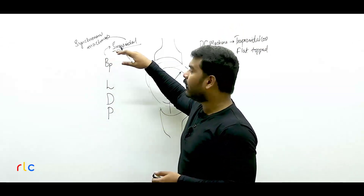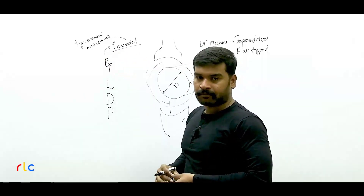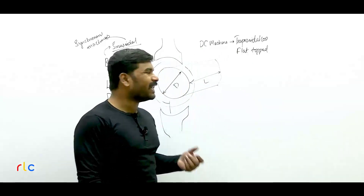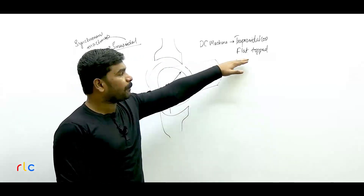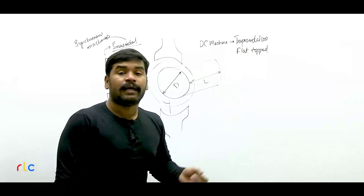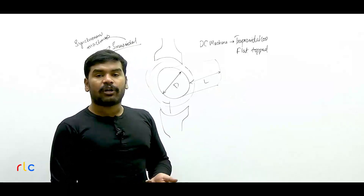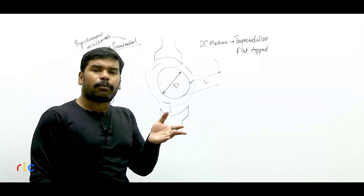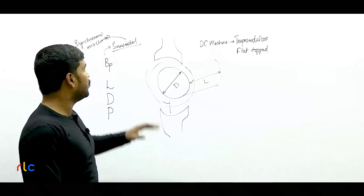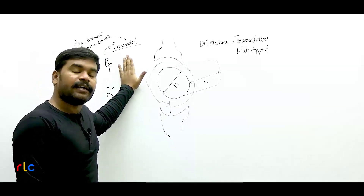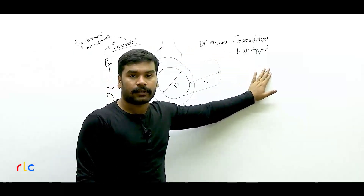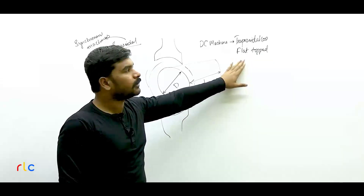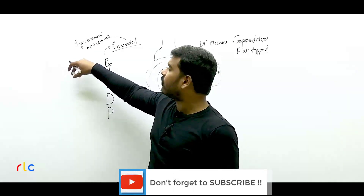For an alternator, you should have only a sinusoidal waveform because in AC machines, quality is more important than quantity. Quality of a waveform means how close it is to a sinusoidal waveform — that is a high-quality waveform. Quantity refers to the average value. A trapezoidal or flat-top wave is almost equivalent to a rectangular or square wave, whose average equals the maximum value. The average of a sinusoidal waveform is only about 0.637 times the maximum, so quantity is less. A flat-top waveform is highly dominant with harmonics. In DC machines, quantity is important; in AC machines, quality is important — therefore flux density must be sinusoidal.